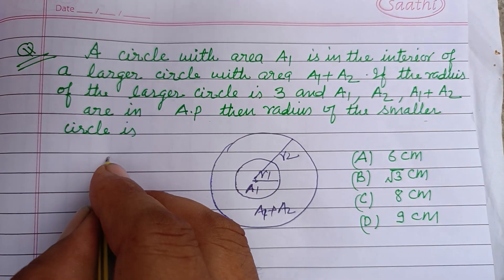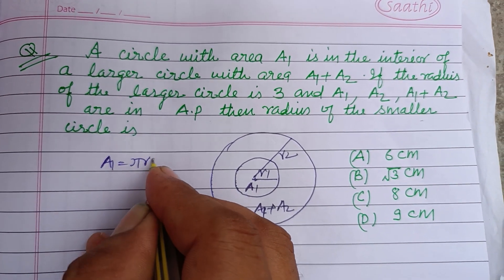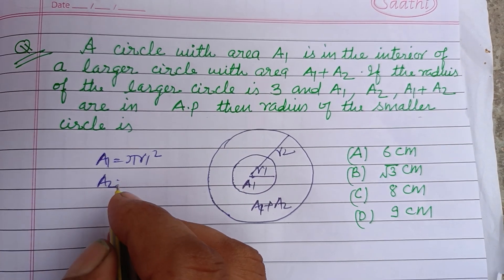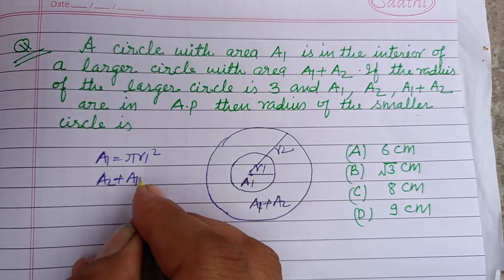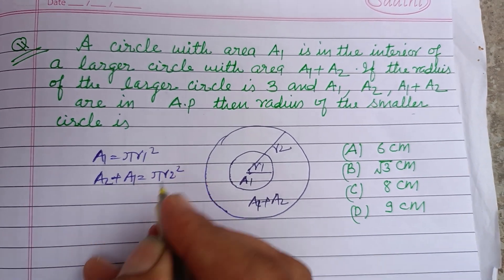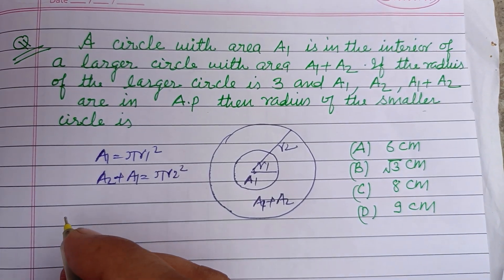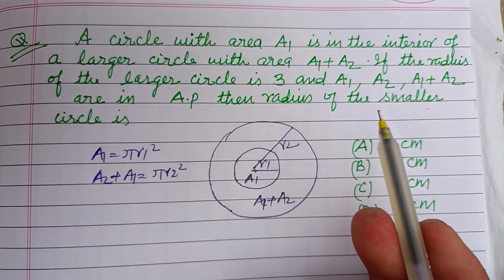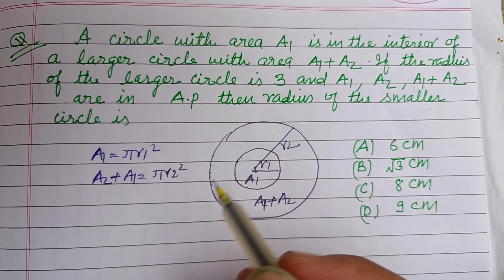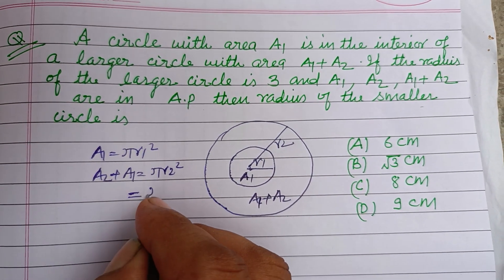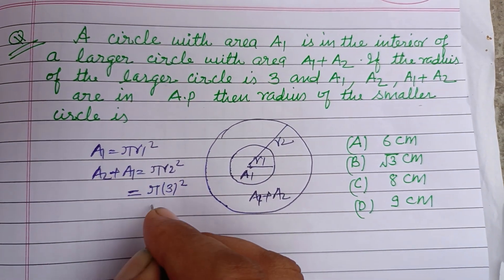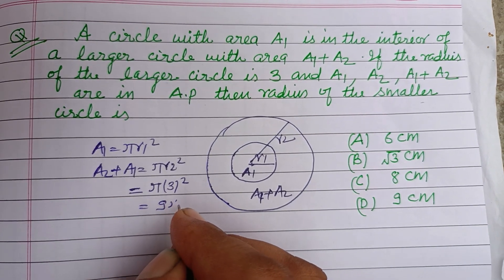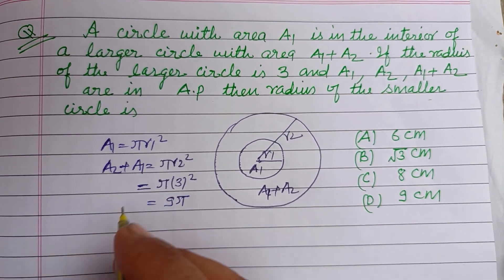So A1 equals pi r1 squared, and A1 plus A2 equals pi r2 squared. The radius of the larger circle is 3, therefore putting pi into 3 squared, that is 9 pi.